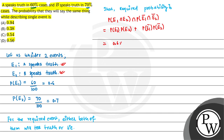So the calculation is: P(E1) × P(E2) + P(E1 complement) × P(E2 complement) = 0.6 × 0.7 + 0.4 × 0.3 = 0.42 + 0.12 = 0.54.